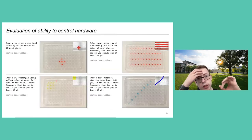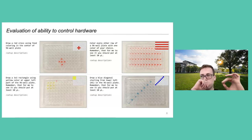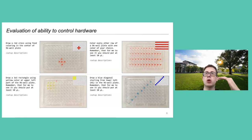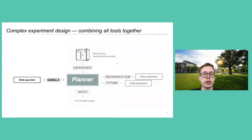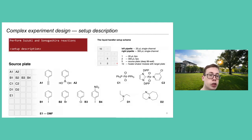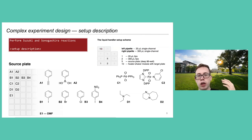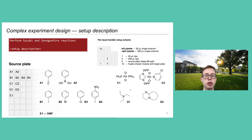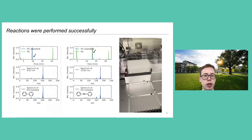We also show that this system can control hardware and writes mostly correct code for liquid handlers. For example, on OpenTrons, we can ask the planner to write code to color every other row of a 96-well plate, and it successfully does it. We integrate all the different tools together to solve quite complex tasks — for example, performing Suzuki and Sonogashira reactions — where the model has information about available tips, heat/shaker modules, and available reactions.